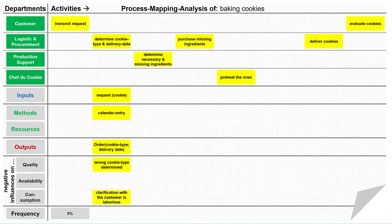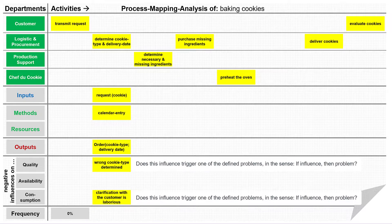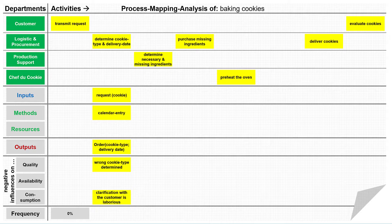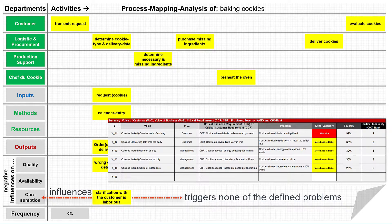Now I check whether these influences are direct triggers of problems and not root causes from the end of the causal chain. I accept wrong cookie type determined, but I would not accept customer's handwriting illegible, which could be a cause of the wrong determination. Please only accept the last trigger in a chain of causes that directly influences the activity negatively — it must always be obvious how the negative influence can affect the activity and lead to a problem. I then assign the influences to the problem categories. The influence wrong cookie type determined clearly affects our first problem because the customer expects a different type of cookie, making it an influence on the quality of the output. The second influence negatively affects the time consumption of resources but does not affect any of our defined problems.